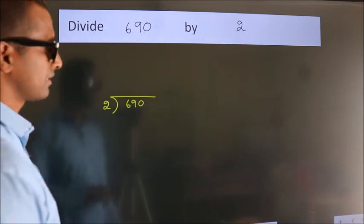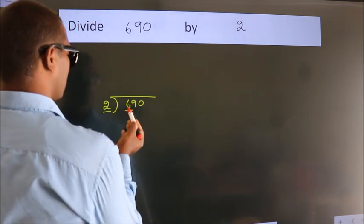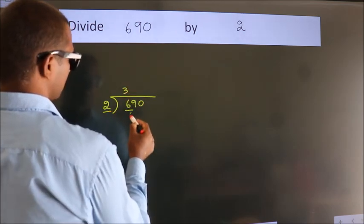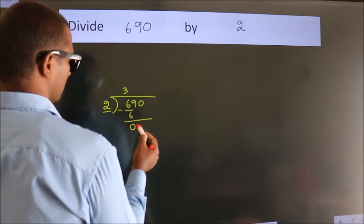Next. Here we have 6, here 2. When do we get 6? In 2 table, 2 times 3 is 6. Now we should subtract. We get 0.